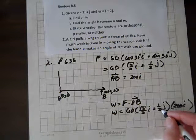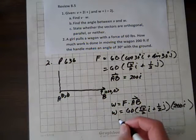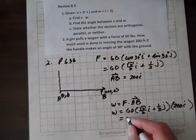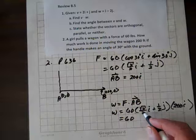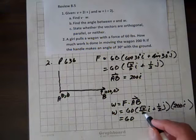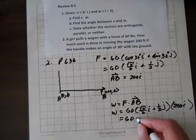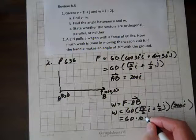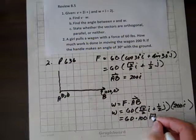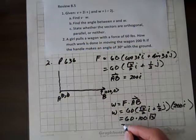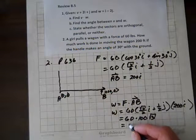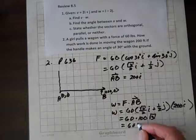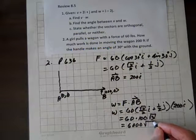0 times 1 half j is just 0, ultimately we get 60 times, and root 3 over 2 times 200, the 2's divide out, and you get times 100 root 3, which equals 6,000 root 3.